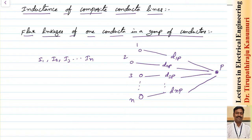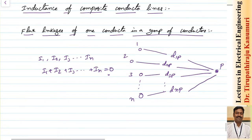I am also assuming the sum of the currents I1 plus I2 plus I3 up to In will be equal to zero, because practically whenever you take a set of conductors, one will act as the go conductor and the second conductor will act as a return path. When you take the set, the net current will automatically be equal to zero — that is why I am taking this assumption.